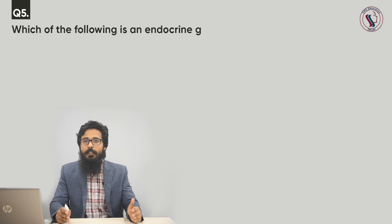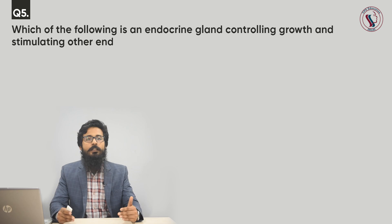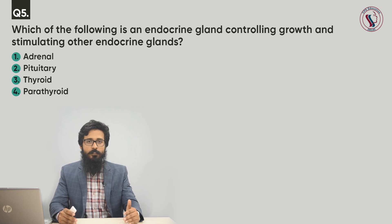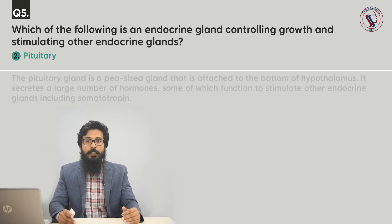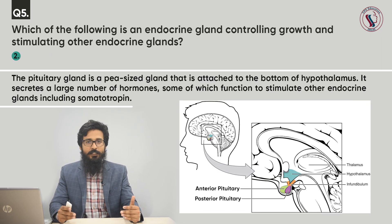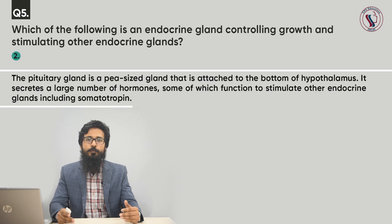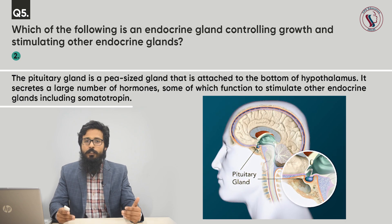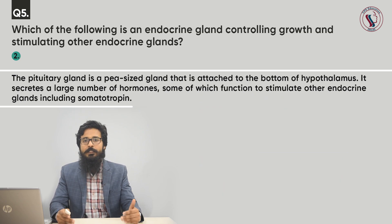Question number five. Which of the following is an endocrine gland controlling growth and stimulating other endocrine glands? Options: adrenal, pituitary, thyroid, parathyroid. The correct answer is the pituitary gland. The pituitary gland is a pea-sized gland attached to the bottom of the hypothalamus. It secretes a large number of hormones, some of which function to stimulate other endocrine glands, including somatotropin, which is a growth hormone. That's why pituitary is the correct answer.